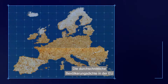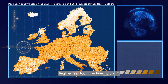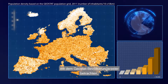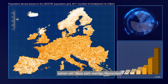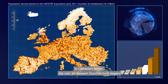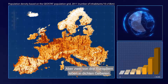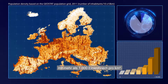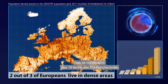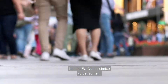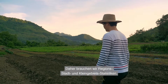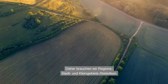If we look at the average population density in the EU, it is close to 100 inhabitants per square kilometer. However, if we take a closer look at the population density using the Geostat population grid, we can see that very few people — 3% of the EU population — live in areas that are close to this average. On the other hand, 2 out of 3 Europeans live in dense areas with more than 1,000 inhabitants per square kilometer, which is at least 10 times the EU average. Looking at the EU averages only hides the reality most people experience in their own environment. This is why we need regional, city and small area statistics.